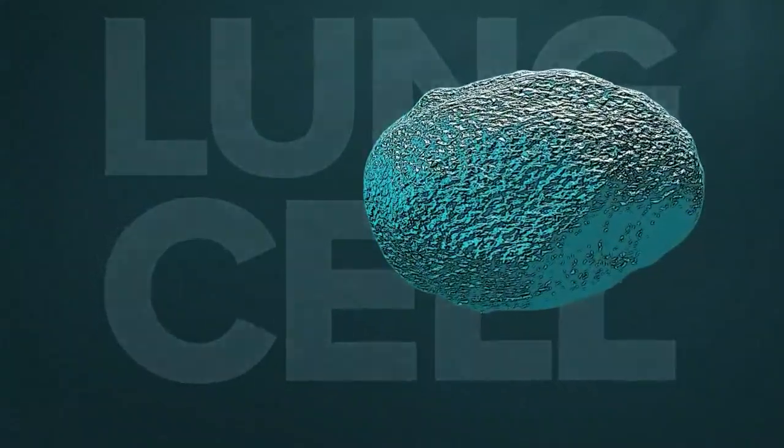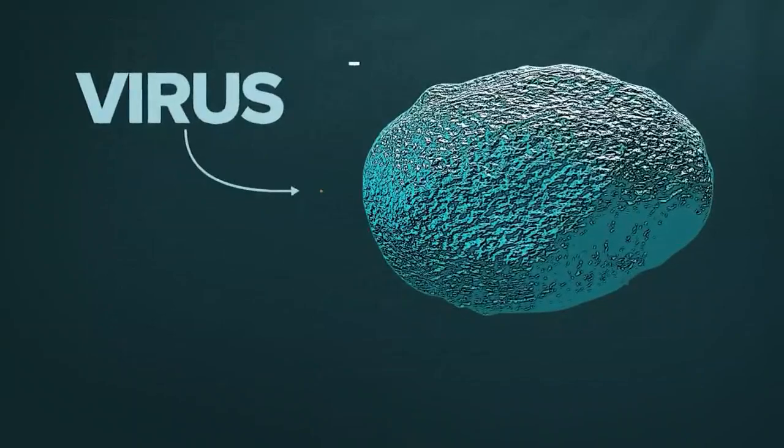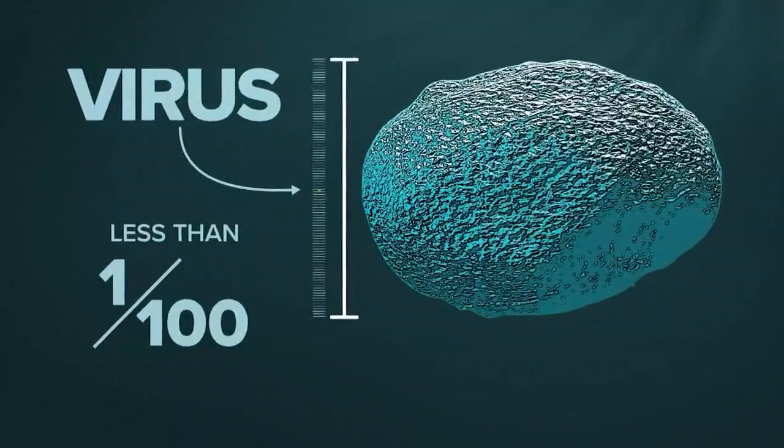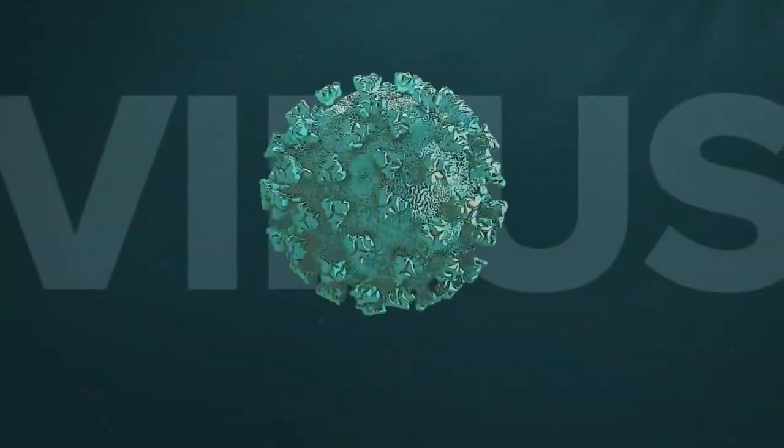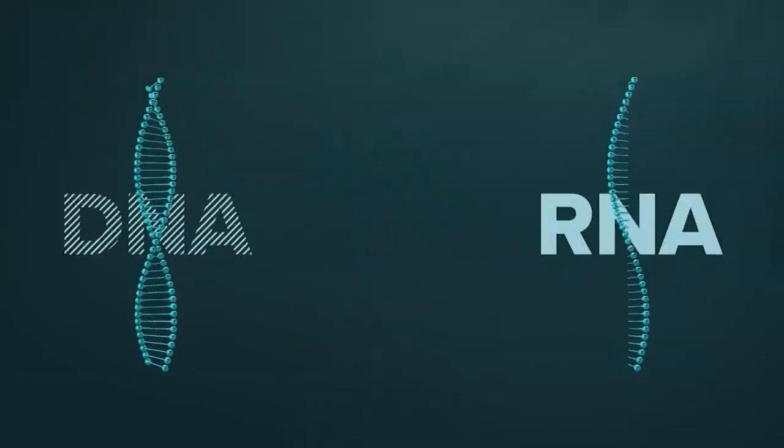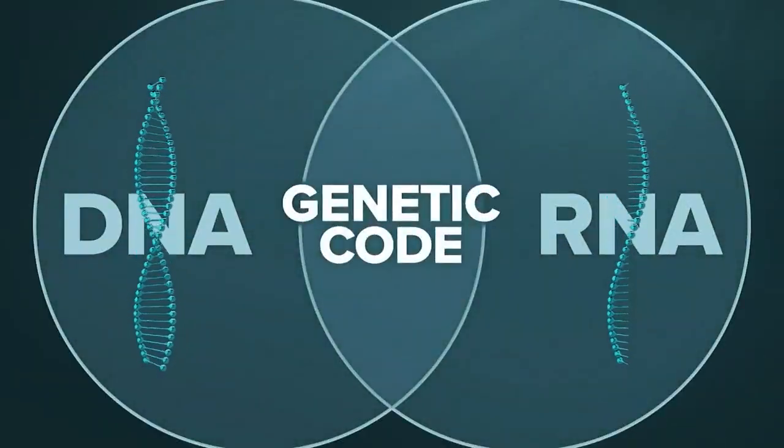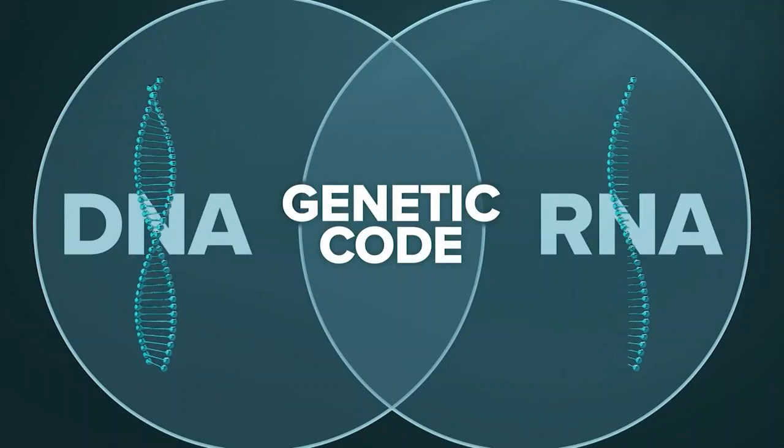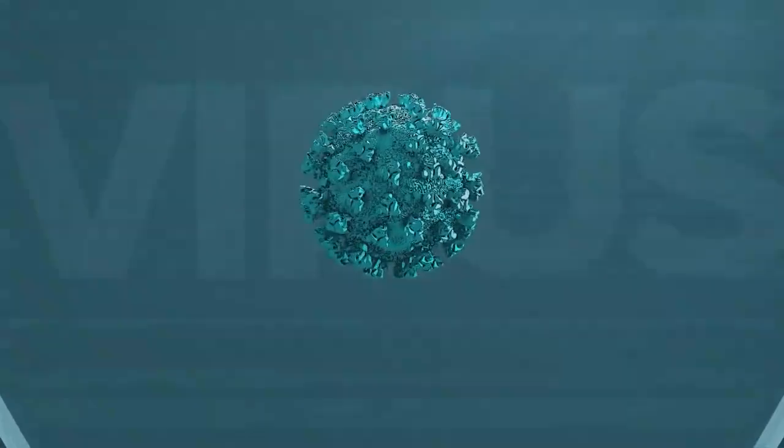Next to a human lung cell, the coronavirus is tiny, a hundredth of the width. The potent stuff is even smaller, the virus's guts, a strand of something called RNA. Similar to our own DNA, this is genetic code, instructions for making copies of the virus.